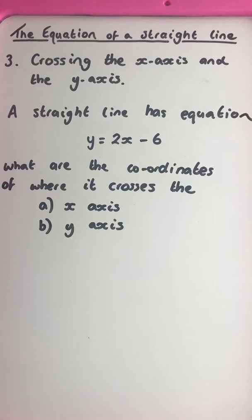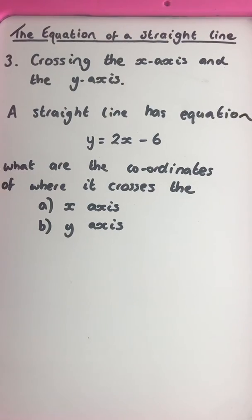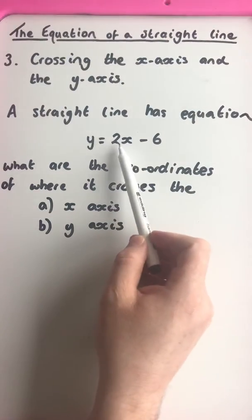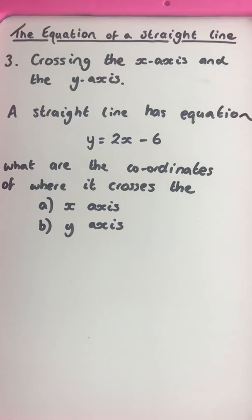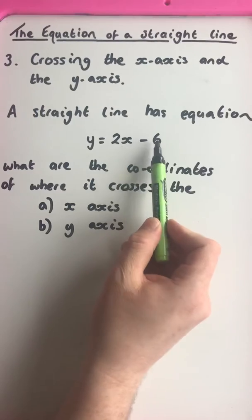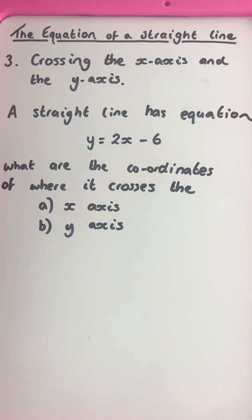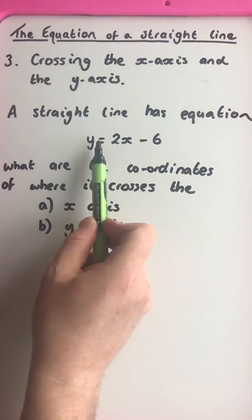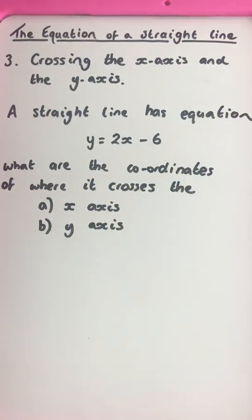So example then, a straight line has equation y equals 2x minus 6. Now this 2 here represents a gradient and the minus 6 here represents negative 6 on your y-intercept. So that takes the form y equals mx plus c.